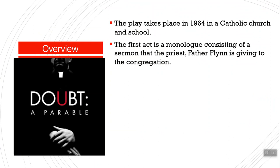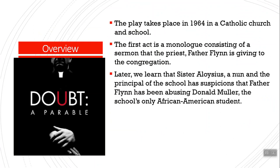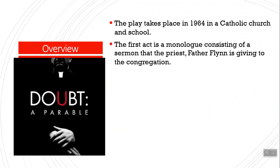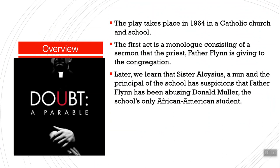Father Flynn is a priest giving a sermon to the congregation, and those first few pages make up the first act. It's a little bit of that narrative exposition we've been talking about. The inciting incident is Sister Aloysius — a nun, the principal of the school — having suspicions that Father Flynn has been abusing Donald Mueller, the school's only African-American student. We don't get this inciting incident for quite a bit of time in the play; it happens a little while later.